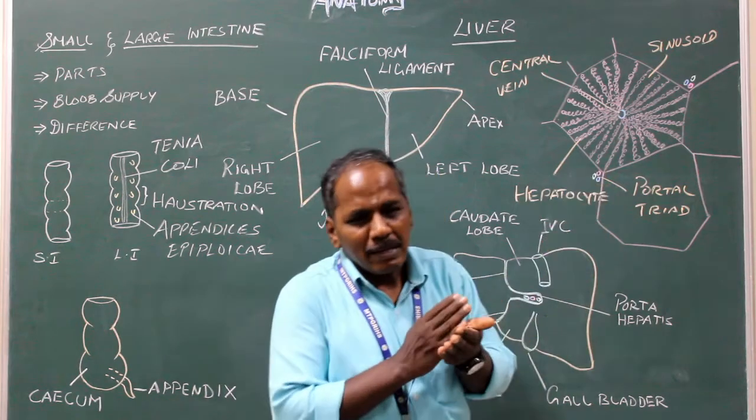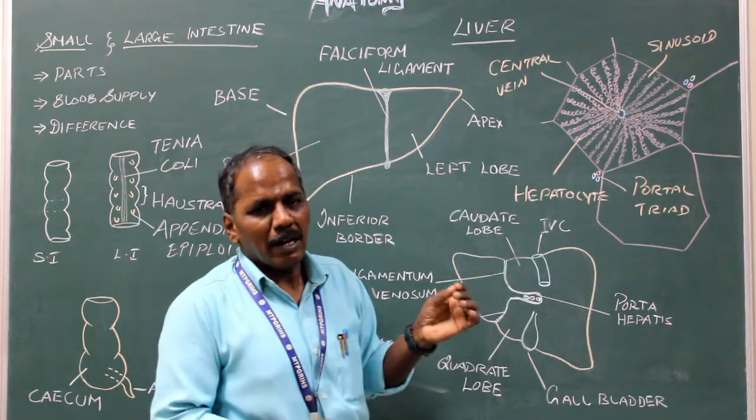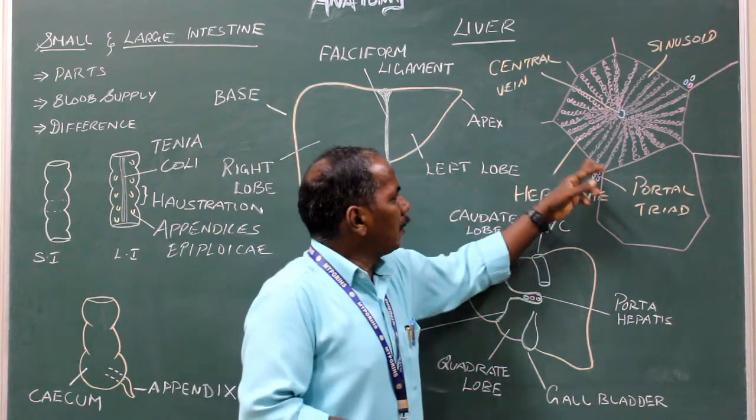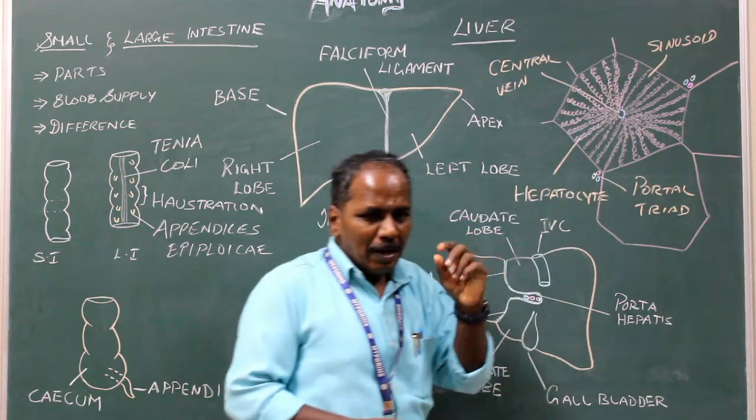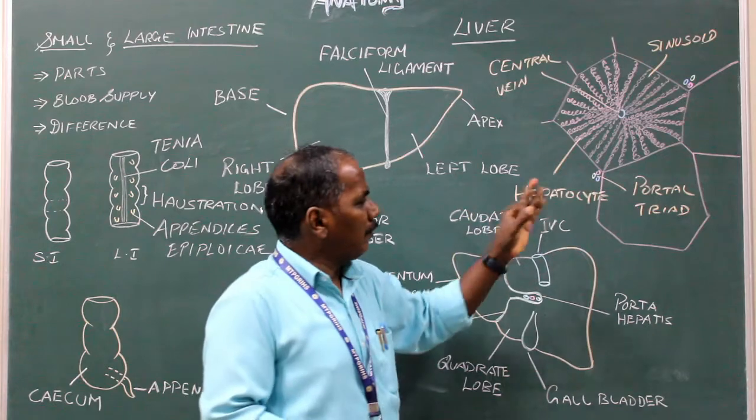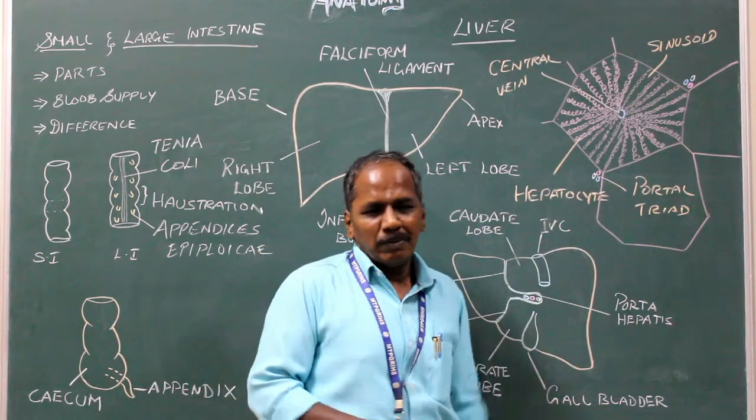The sinusoids in an aspect is lined by endothelial cells, which also contain the Kupffer cells. At the angle or edge of the lobules, there is a branch of hepatic artery, a branch of portal vein, and a branch of hepatic duct. These three structures together form the portal triad.